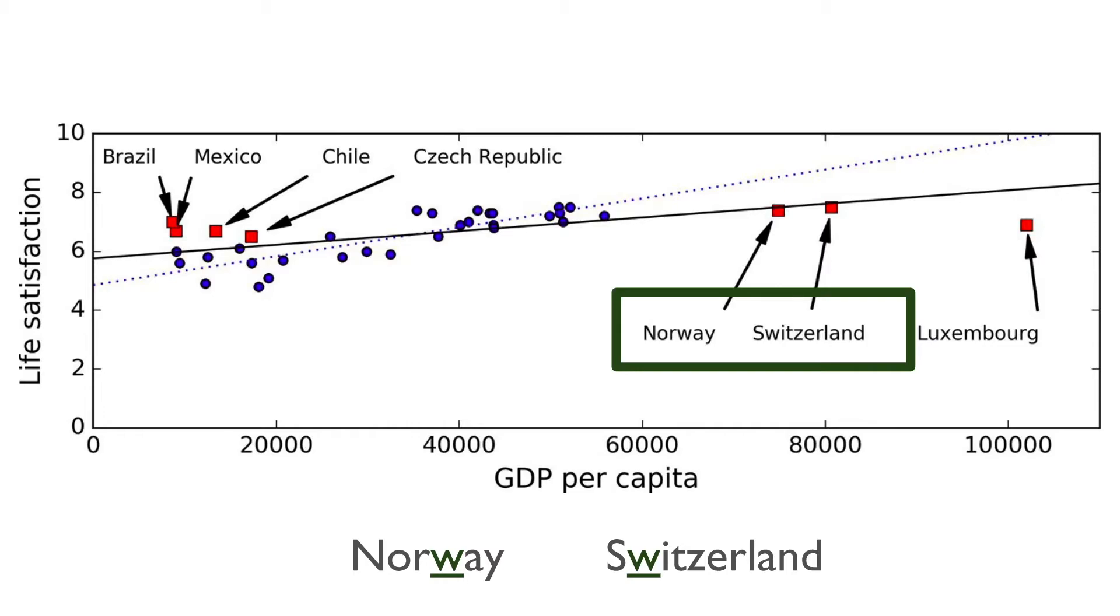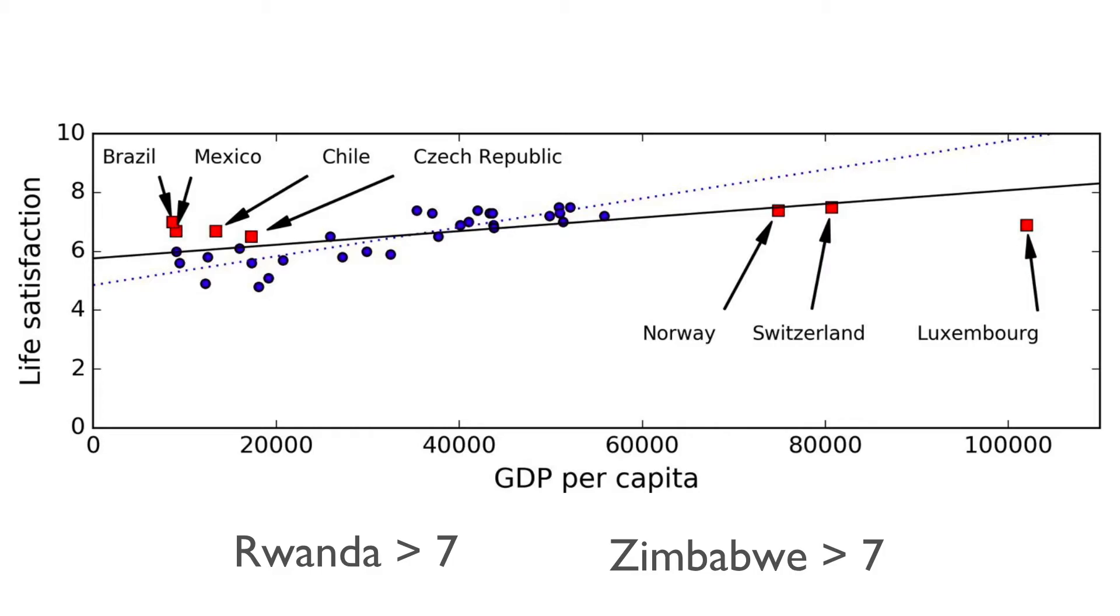Now, if you pass unknown countries which contain W in their name like Rwanda and Zimbabwe, your model will predict that the life satisfaction is greater than 7 in both Rwanda and Zimbabwe.